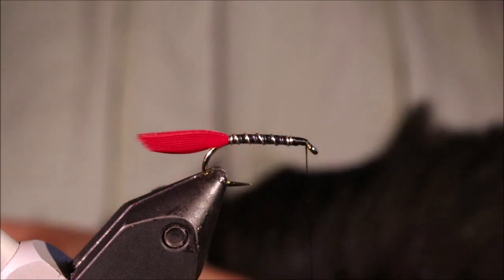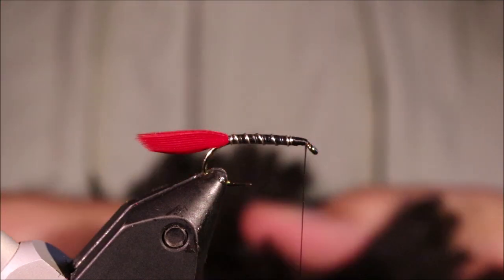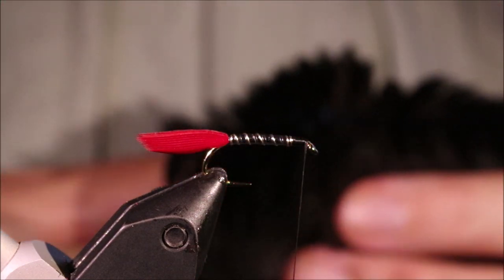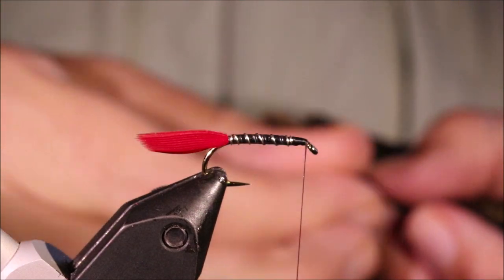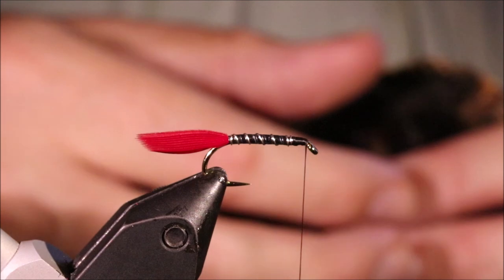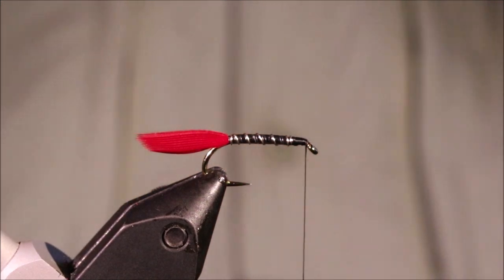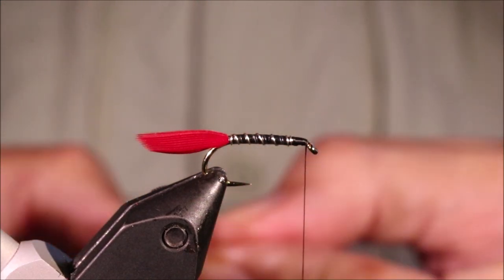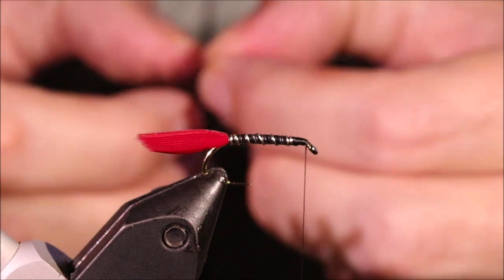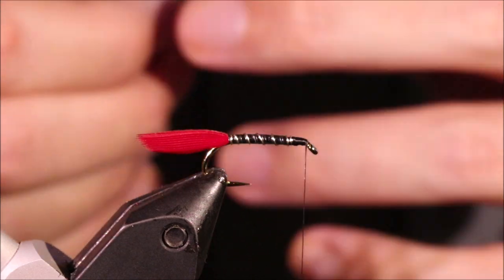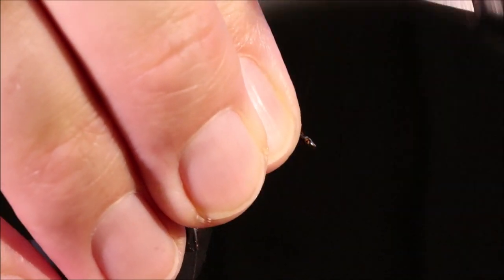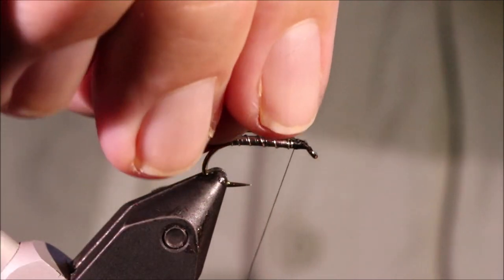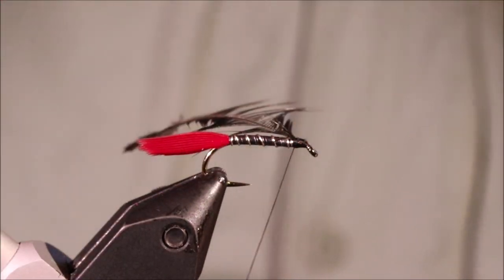Hackle, black hen. I'm going to use a natural, but you can use a dyed if you want. I just like the slightly off-black of the natural on this fly, for whatever reason. Just to my eye it looks better. It'll make no difference to it as a fishing fly.